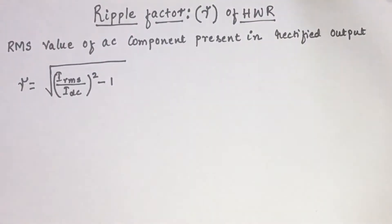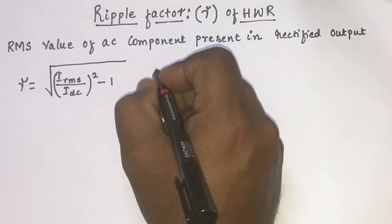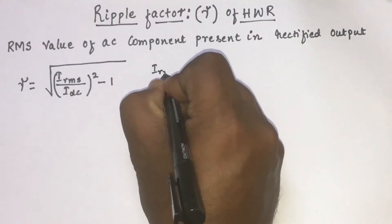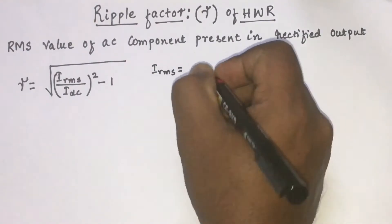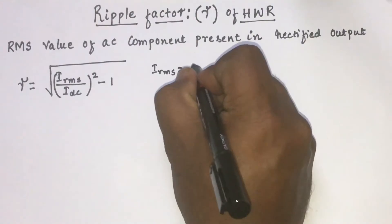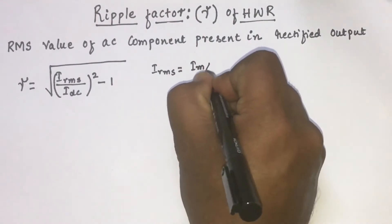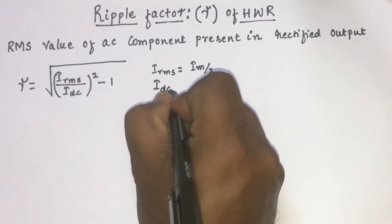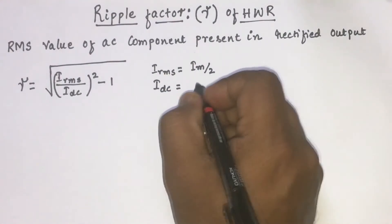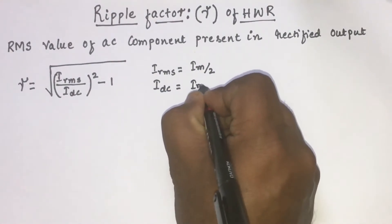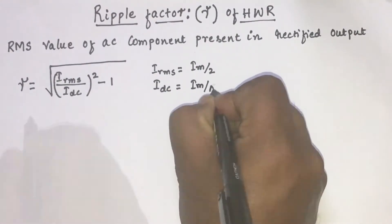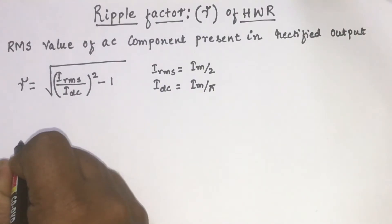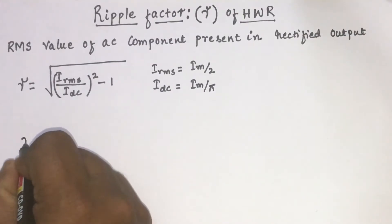From our previous lecture we know I_rms of a half wave rectifier is I_m by 2, and I_dc of a half wave rectifier is I_m by π. Using these two values in this equation, we can write the ripple factor.